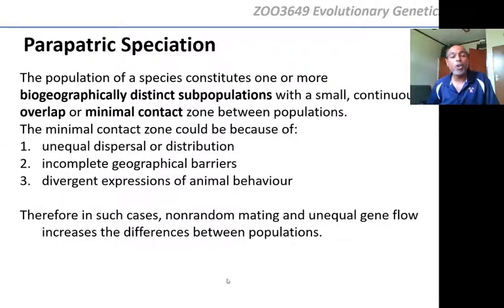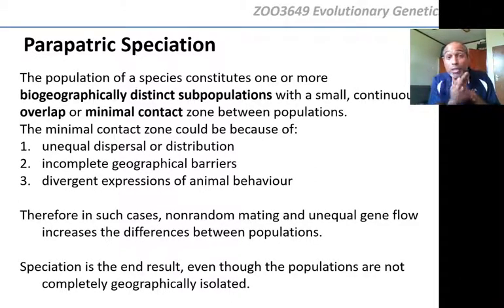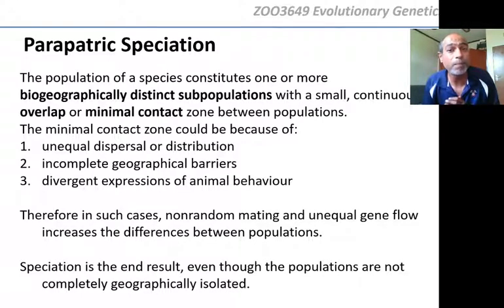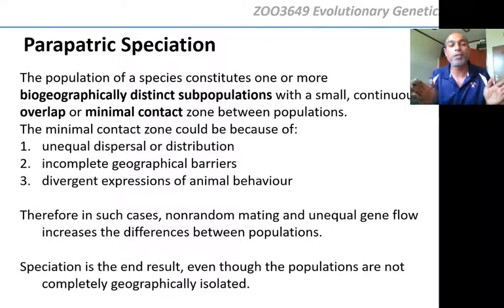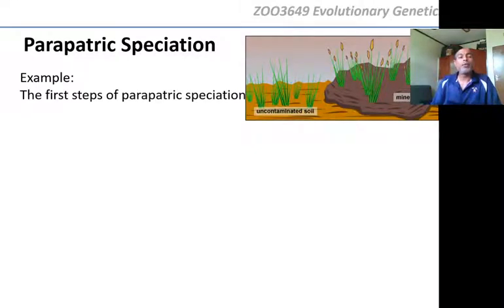Non-random mating is when one population mates only with members that look just like them. They choose their partners and do not choose partners from the other population. So even though both populations exist in the same place, there is no gene flow between them, and under the classical model you will get speciation. As soon as you stop gene flow, you will get speciation — even without complete geographic isolation.